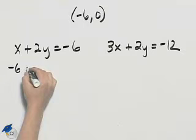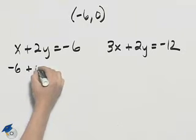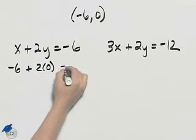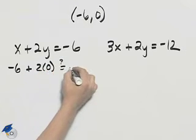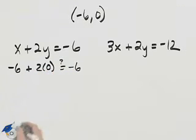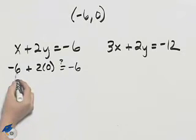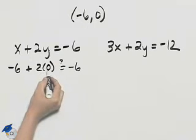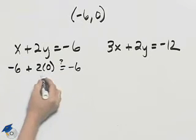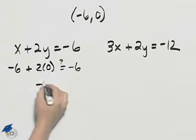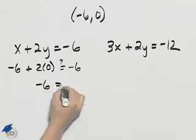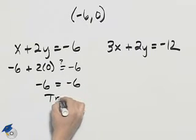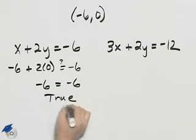I'll have negative six plus two times zero. I want to see if that's equal to negative six. Negative six plus two times zero — two times zero is zero — so I get negative six equals negative six. That is a true statement.